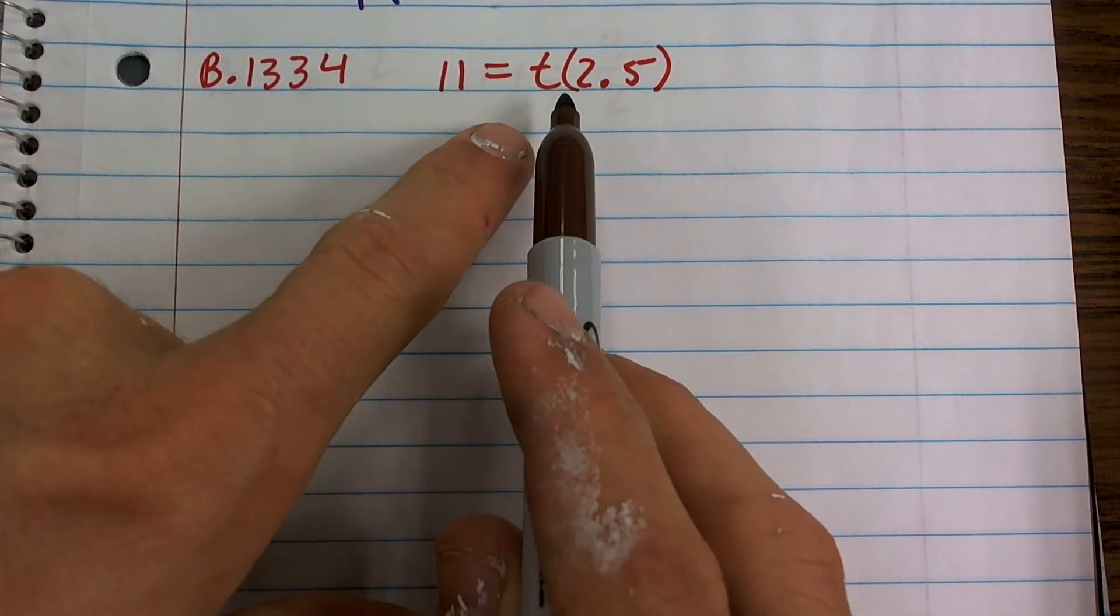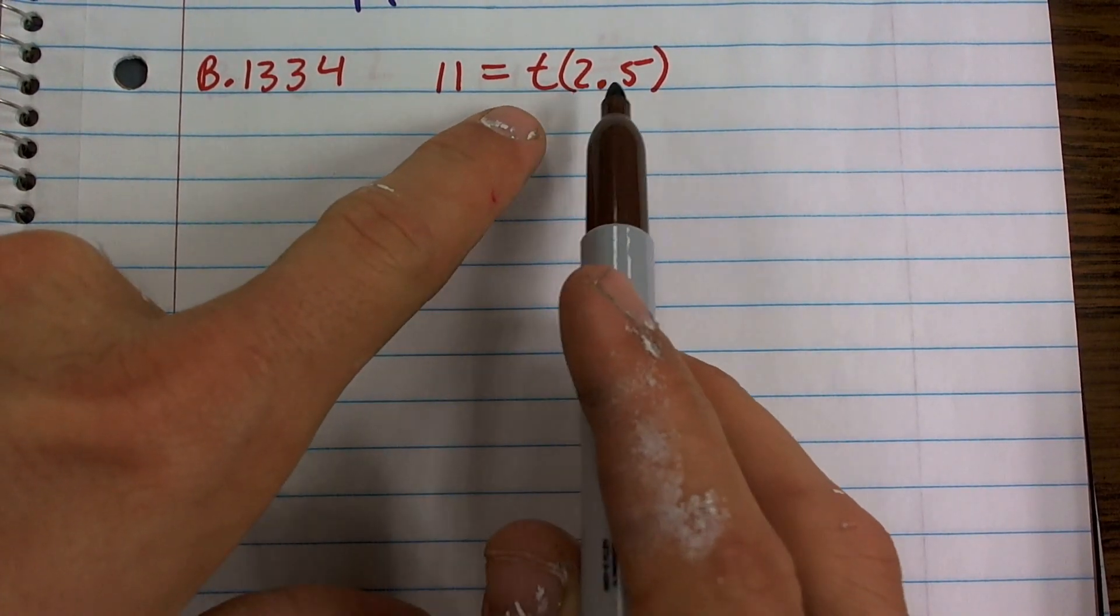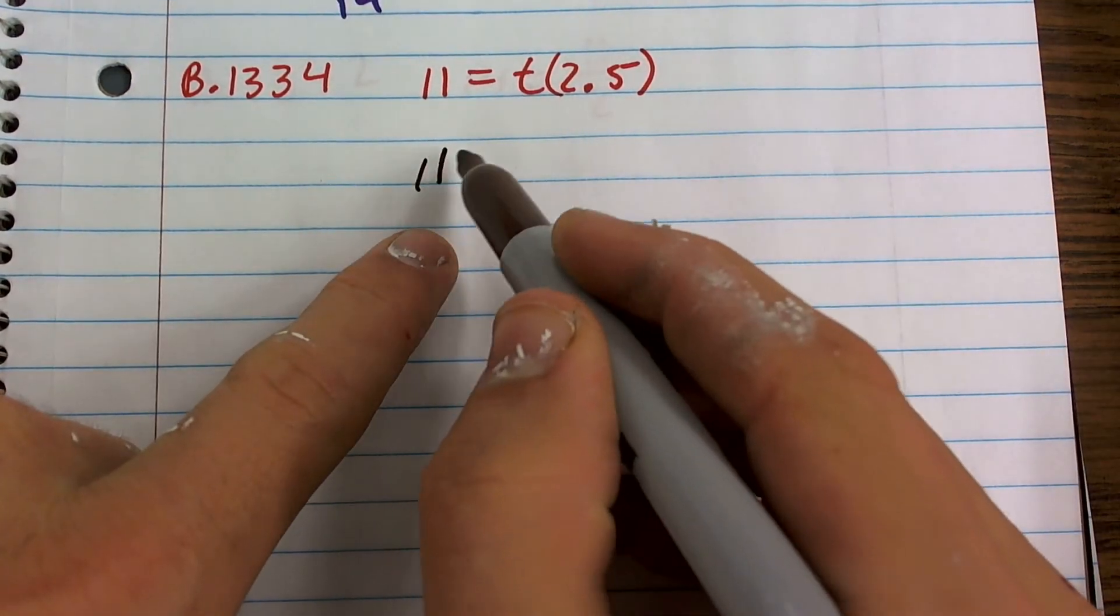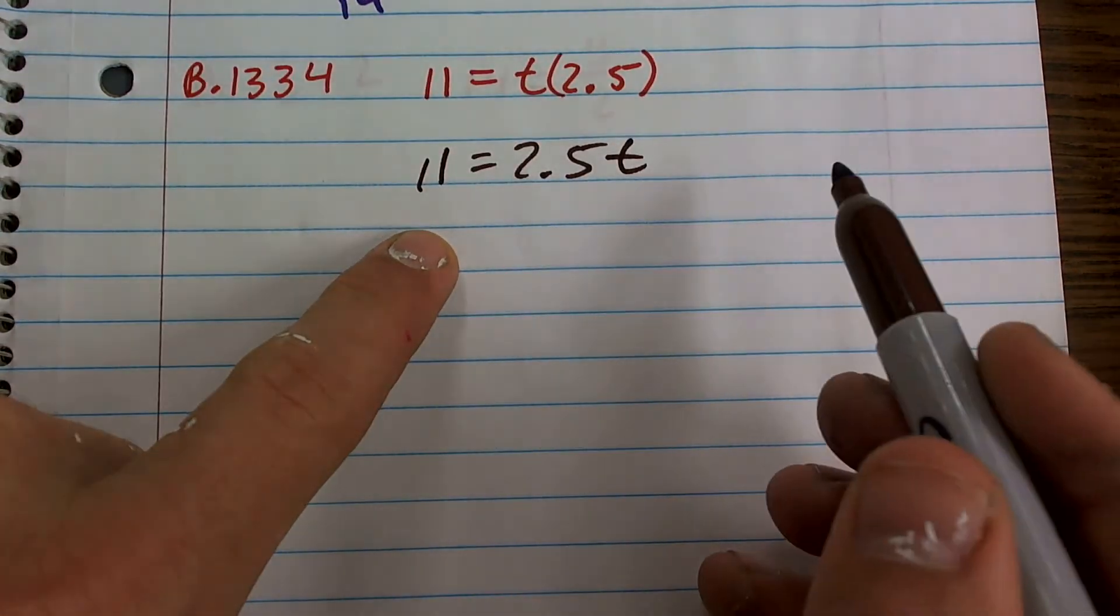What is happening with this variable? Well, here I'm multiplying 2.5 times my variable. So we like to rewrite this as 11 equals 2.5 times t.